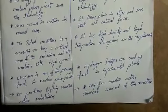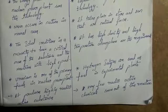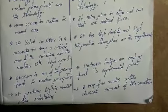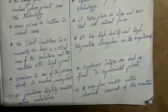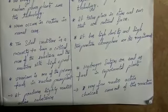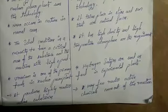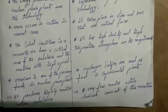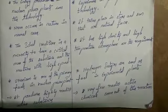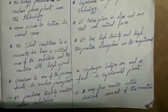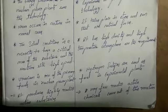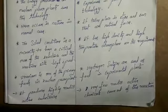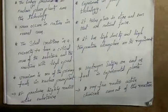Finally, fission produces highly radioactive substances, whereas in fusion, very few radioactive chemicals come out of the reaction. These are the main differences between fission and fusion reactions.